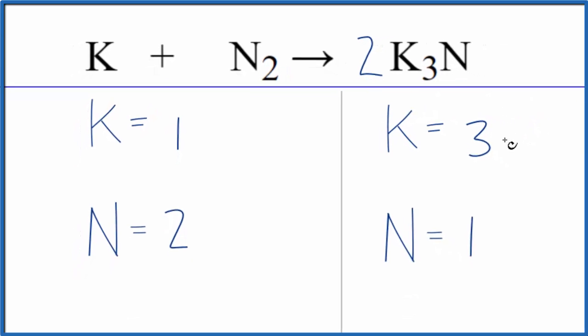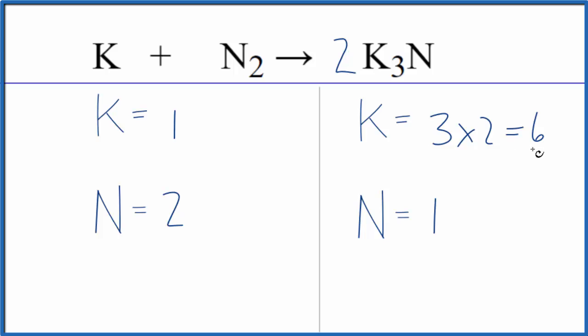Three times two, that'll give us six, so we have our even number. And then the two goes to everything, so two times the one nitrogen. That'll give us two nitrogen atoms.